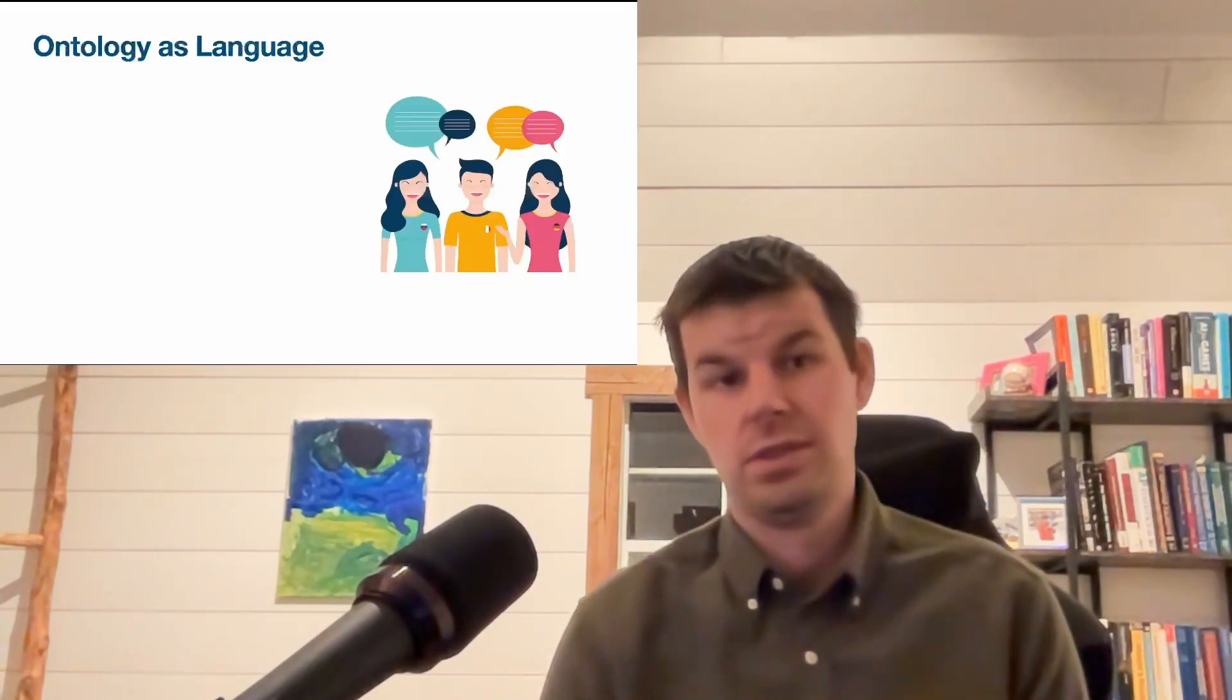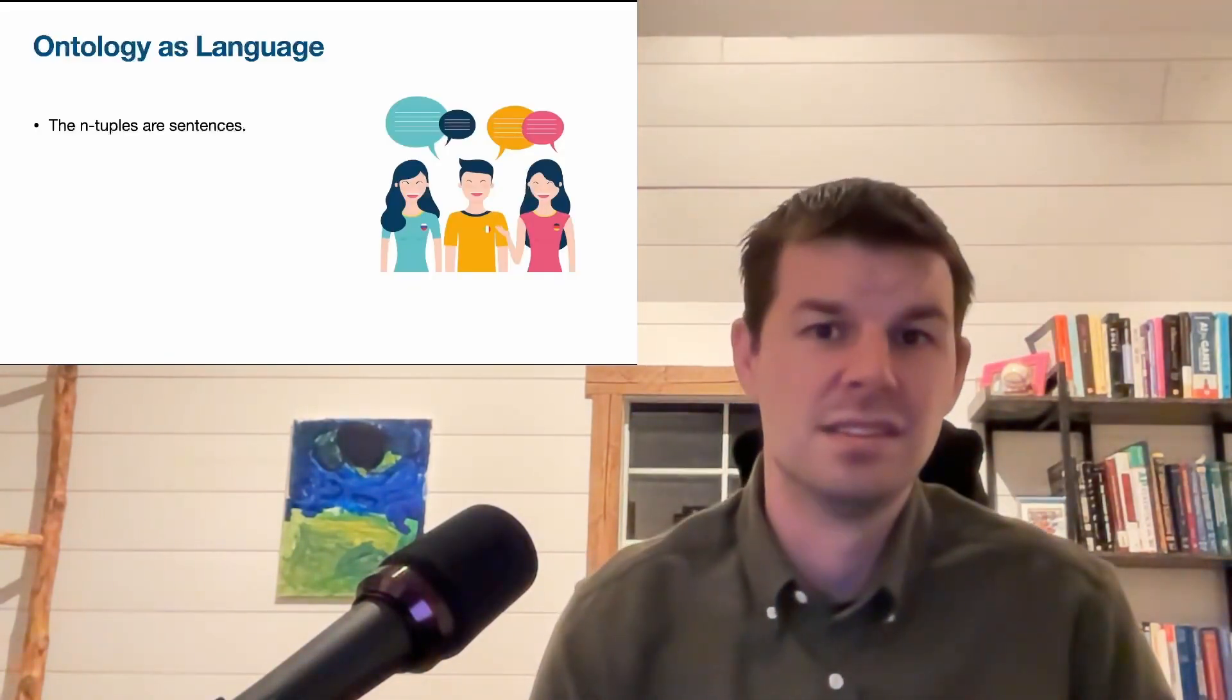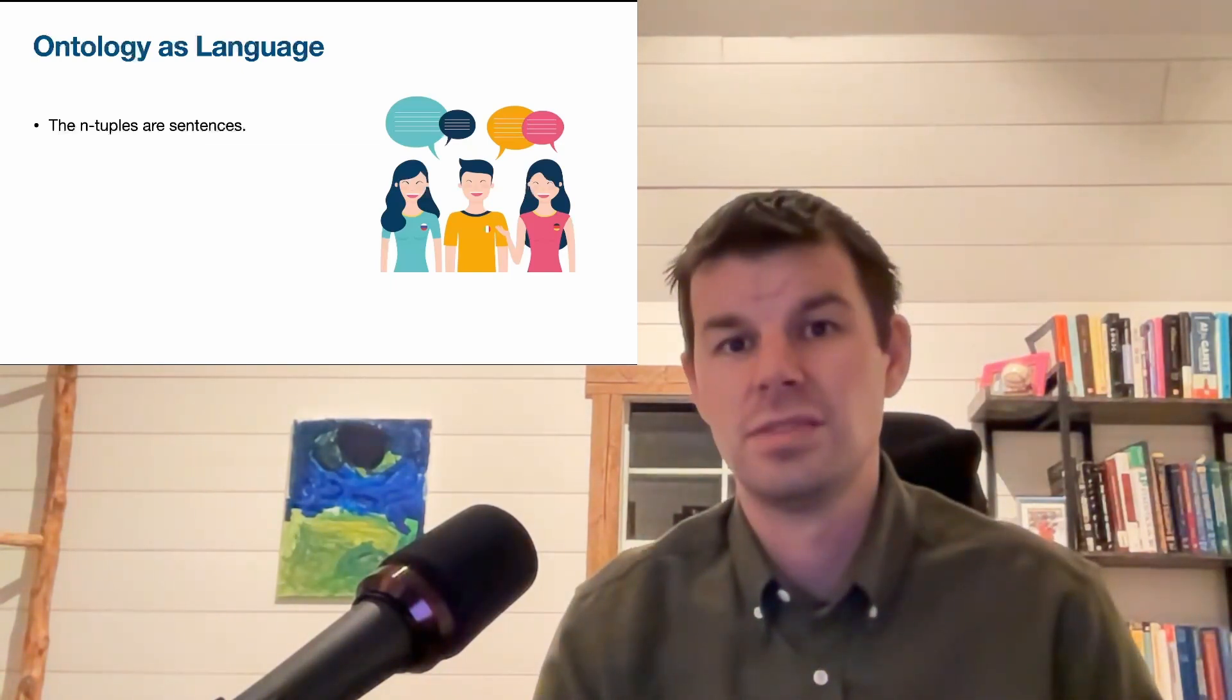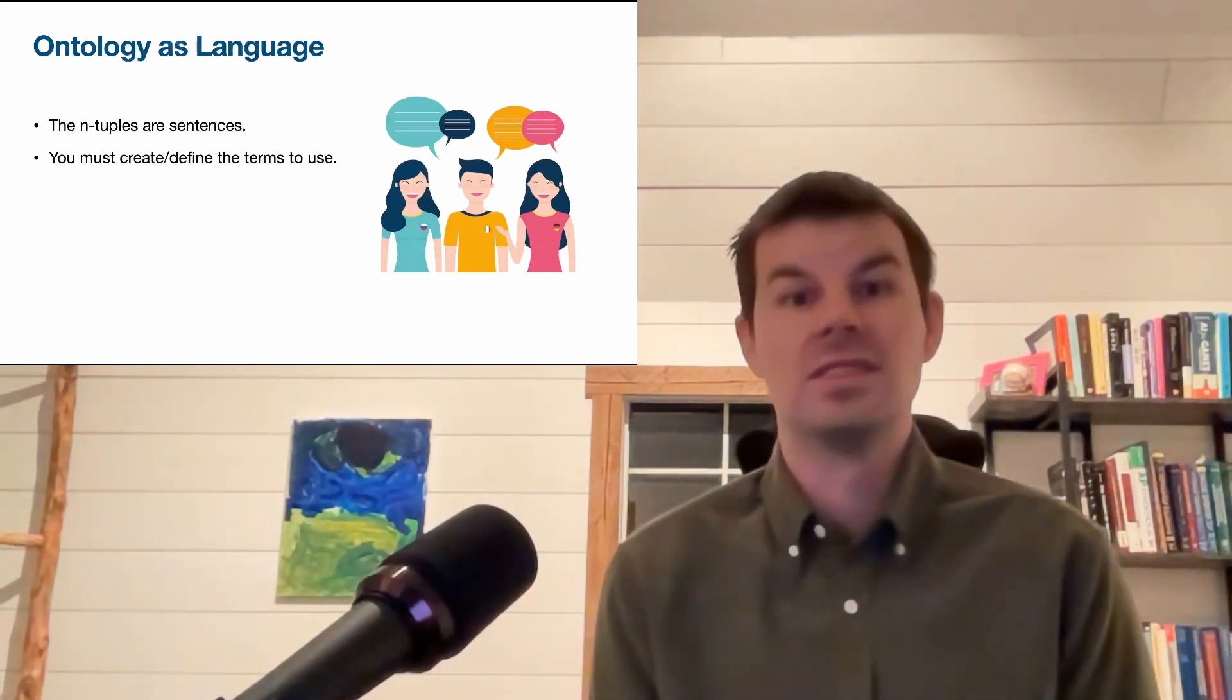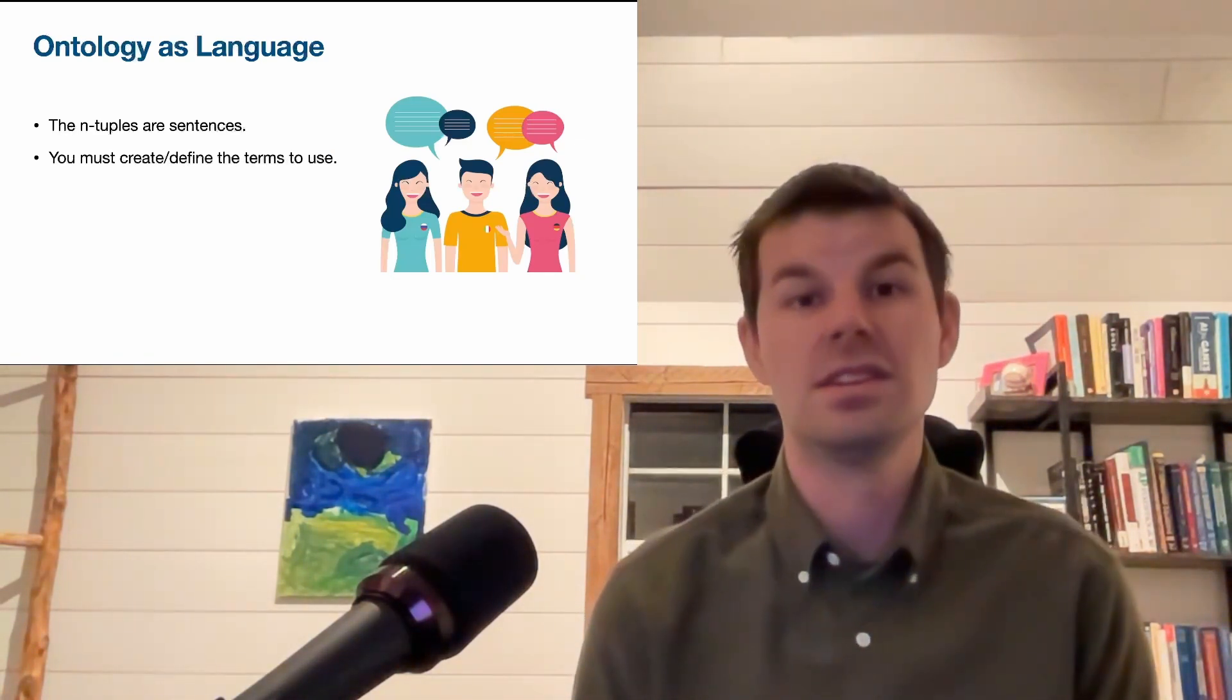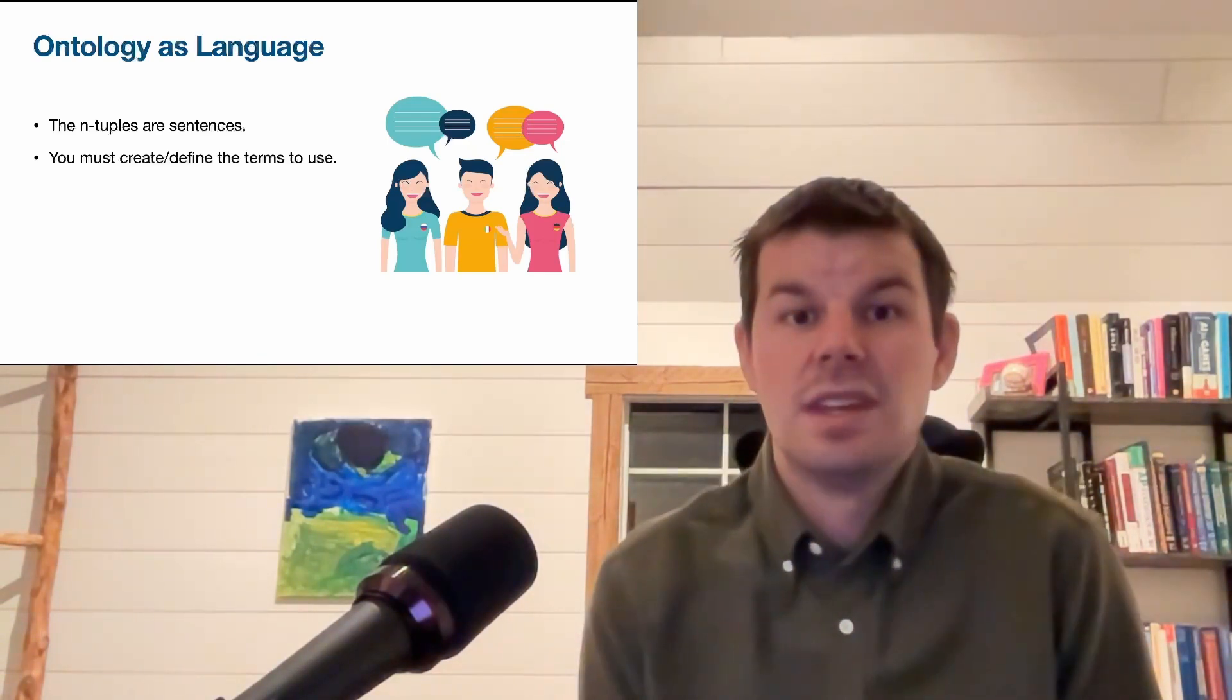Ontology is a language. N-tuples are sentences. When we said Mozart lives in Austria or was born in Austria, that's a sentence, that's the kind of thing I can express in natural language, it's the kind of thing we can represent in our ontology language. When you build an ontology, you have to create the terms and define them that people are going to be using. So you're building a language.